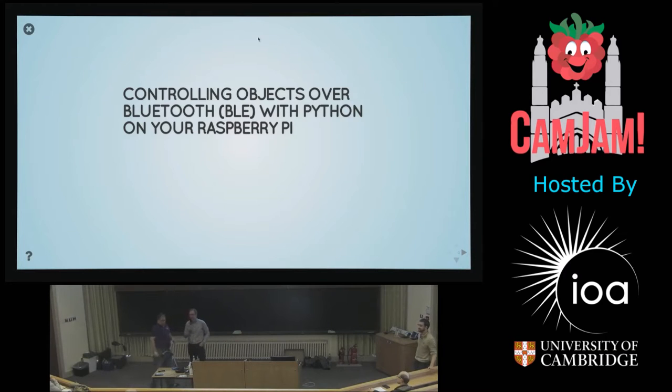Good afternoon everybody. We're going to basically do three demos today, if the demo gods are with us. We're going to have a Raspberry Pi 3 communicate with a micro:bit over Bluetooth, a Raspberry Pi talk to another Raspberry Pi, and finally a phone communicate over Bluetooth to this Raspberry Pi again.